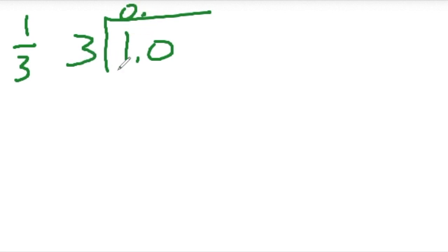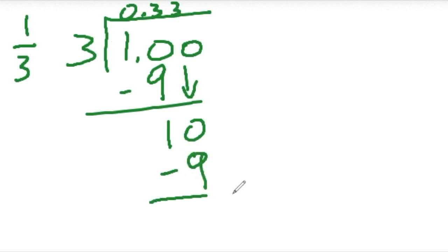So we put a zero here because 3 doesn't go into 1. The decimal goes up there. How many times does 3 go into 10? Well, it goes three times. 3 times 3 is 9. Subtract, and we have 1. And remember, you can always add another zero. So let's bring that zero down. And look, we get 10. 3 goes into 10 how many times? 3. So 3 times 3 is 9. Subtract. Get 1.